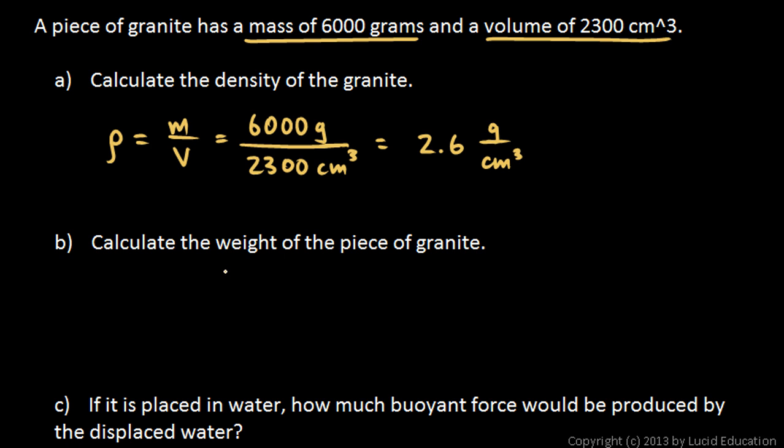Then we're told to calculate the weight of the piece of granite. That's not too bad either if you remember the formula for weight. The weight of any object is the mass times g. And in this case, the mass is given. That's 6,000 grams. But in this formula, m here is in kilograms. So 6,000 grams, that's 6 kilograms times g.